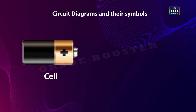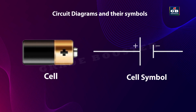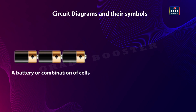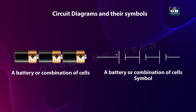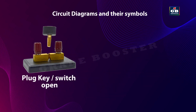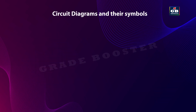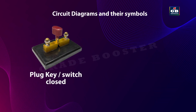This is an electric cell and this is its symbol. A battery or combination of cells and its symbol. Plug key or switch open — this is the symbol of it. Plug key or switch closed — this is the symbol of plug key closed.